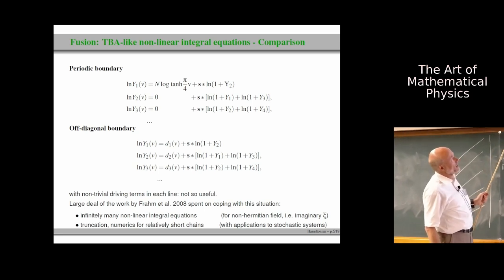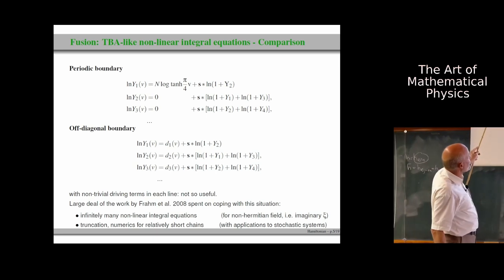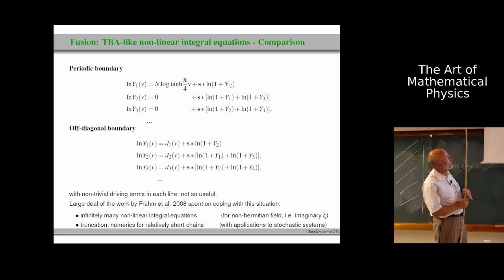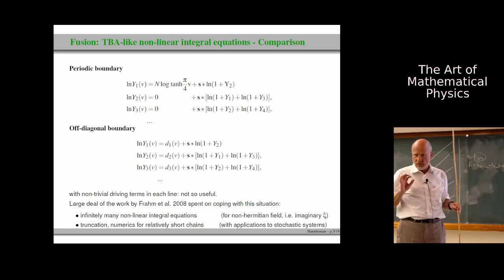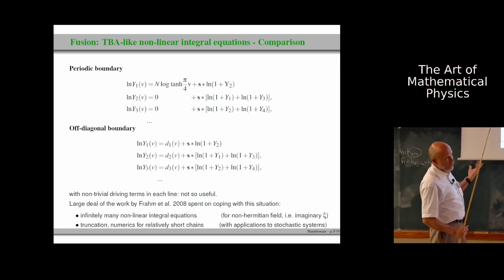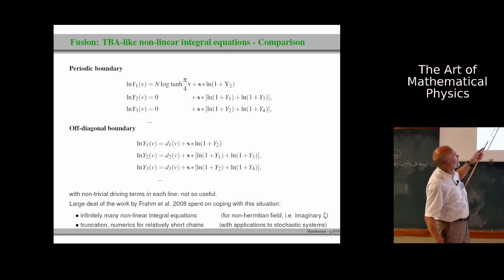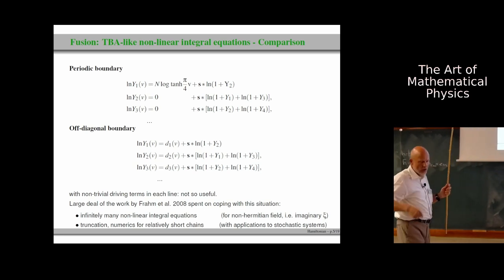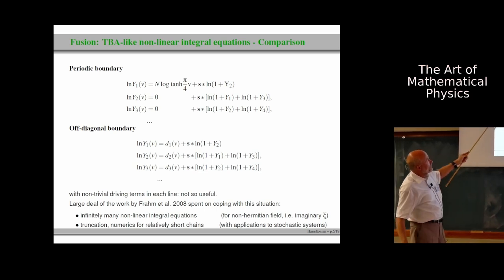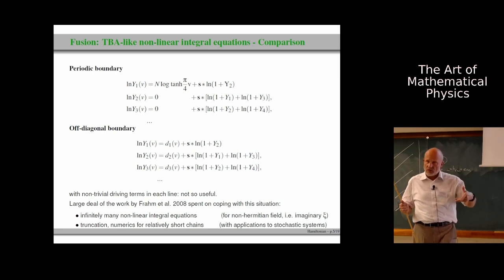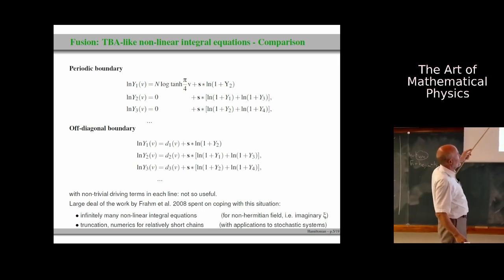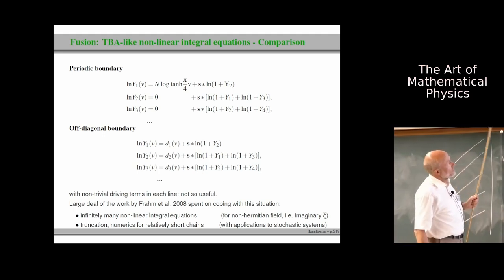Here on one slide, intermediate results by use of fusion T-Y systems for periodic boundaries. That's a simple case. We have for the XXX chain an infinite series of functions y1, y2, y3, etc. Let us focus on the ground state of the Hamiltonian. An infinite series of functions which satisfy nonlinear integral equations, TBA equations. The driving term contains the system size n. So instead of minus beta over hyperbolic cosine as in thermodynamics, here we have n times log hyperbolic tangent in the first line. In all other lines, in the infinitely many other lines, the driving term is 0 for the periodic boundary case. And then one can apply tricks and reduce this infinite set of equations to a finite set.